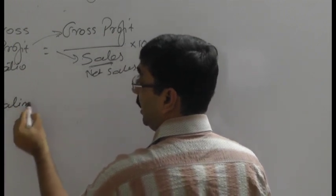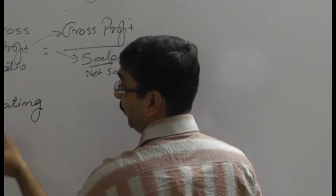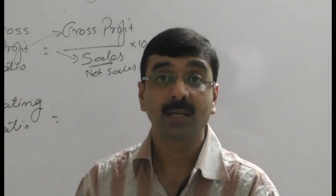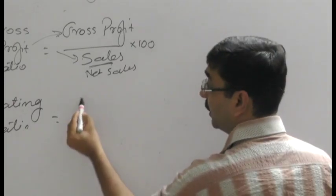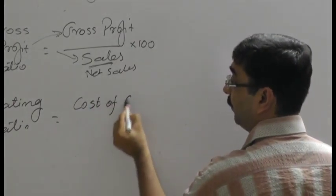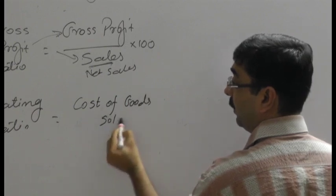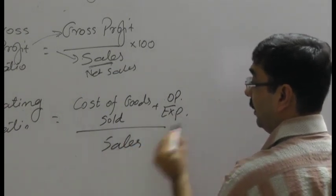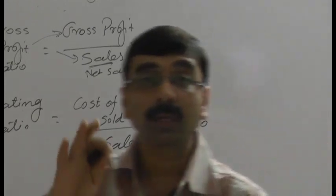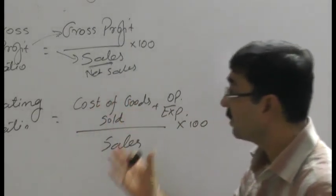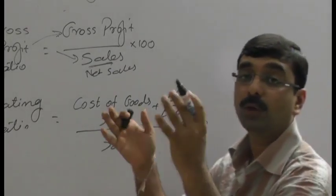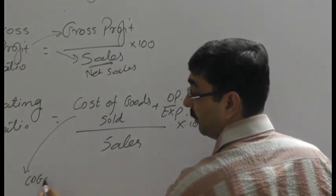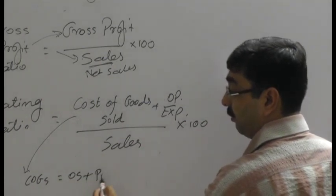Moving to the operating ratio — this is a comparison of operating expenses of the business with net sales. The formula is: (cost of goods sold plus operating expenses) divided by sales, multiplied by 100. The sales is compared with cost of goods sold and operating expenses. The cost of goods sold can be determined as opening stock plus purchases.